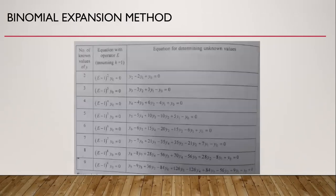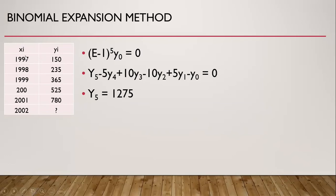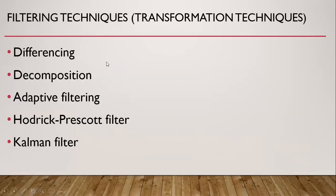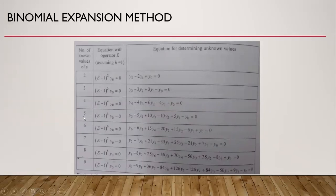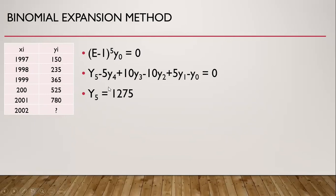Now let us see some of the methods of extrapolation. This one is binomial expansion method. If there are two values which are known, we can use this formula to calculate the sixth. I illustrate this with an example. If this is our data: in 1997 the demand is 150 units, in 1998 it is 235, in 1999 it is 365, and so on. By using this formula, we arrive that the demand for year 2002 is 1275 units.